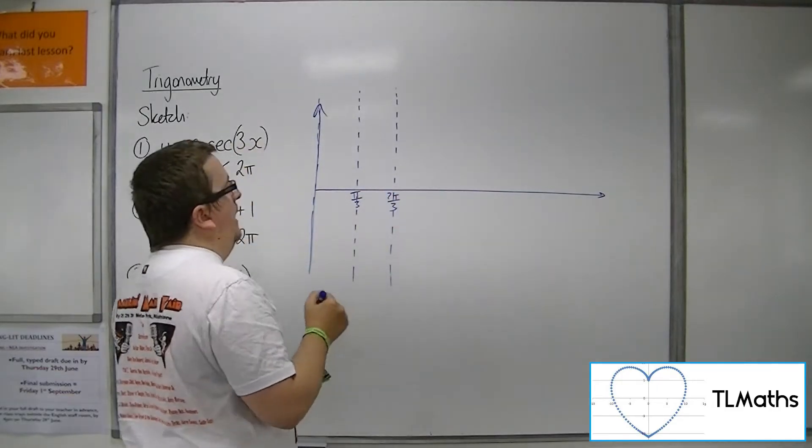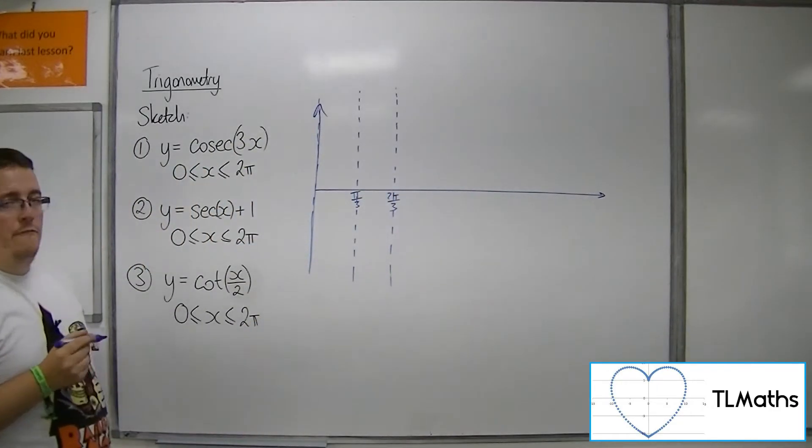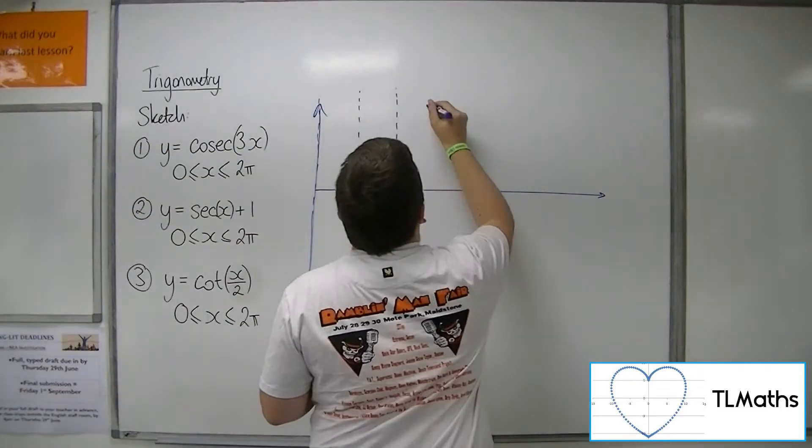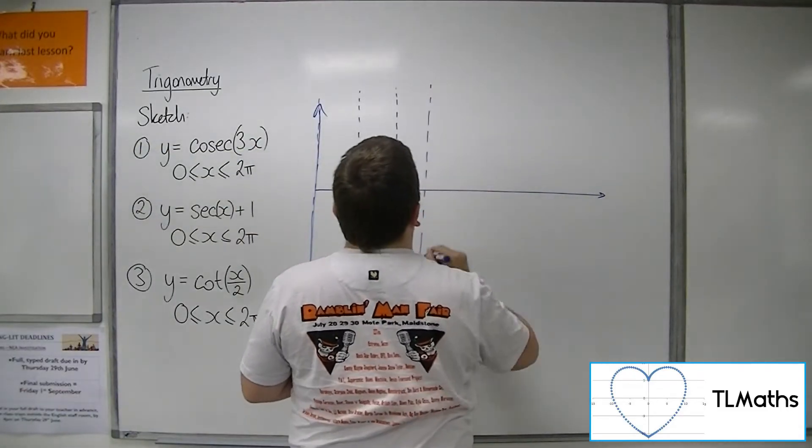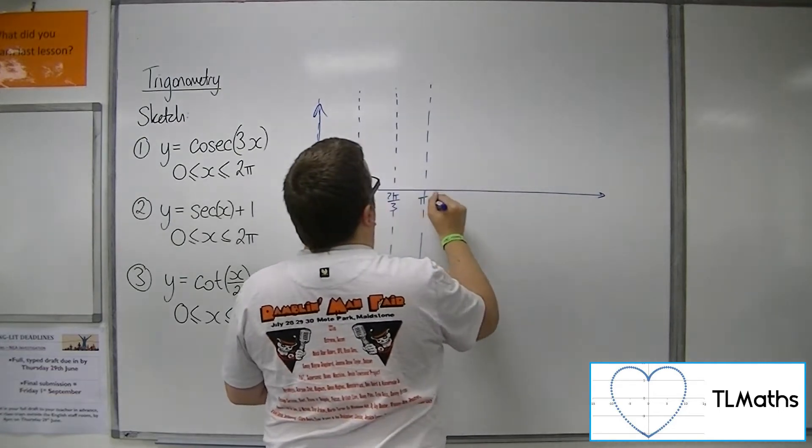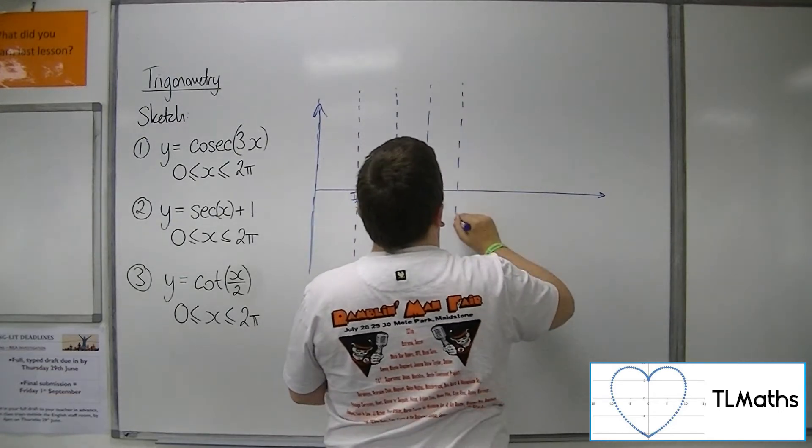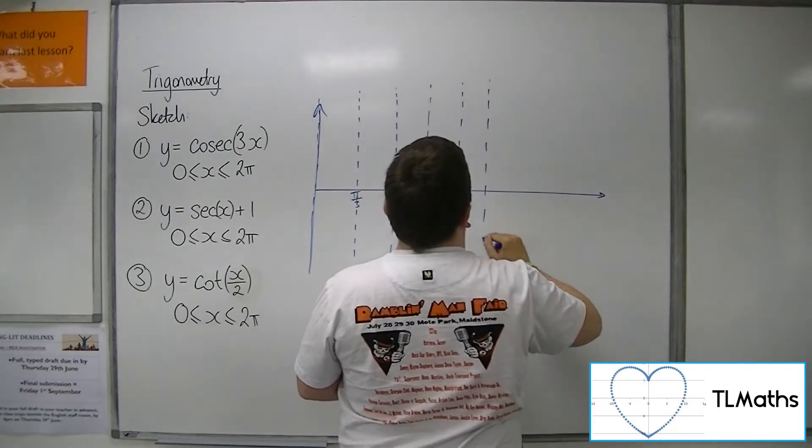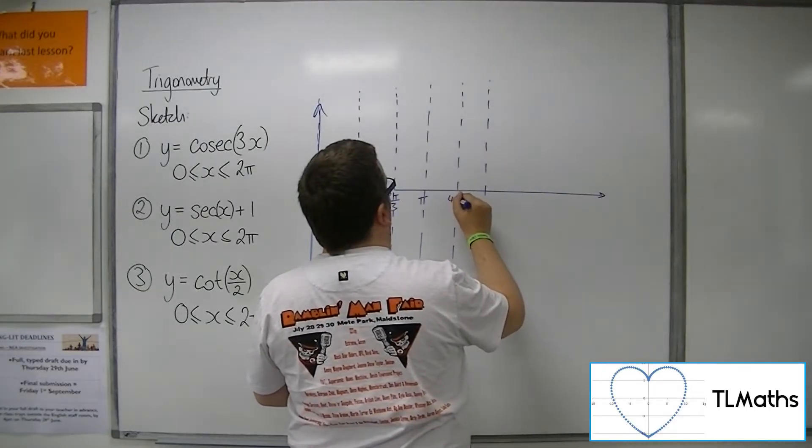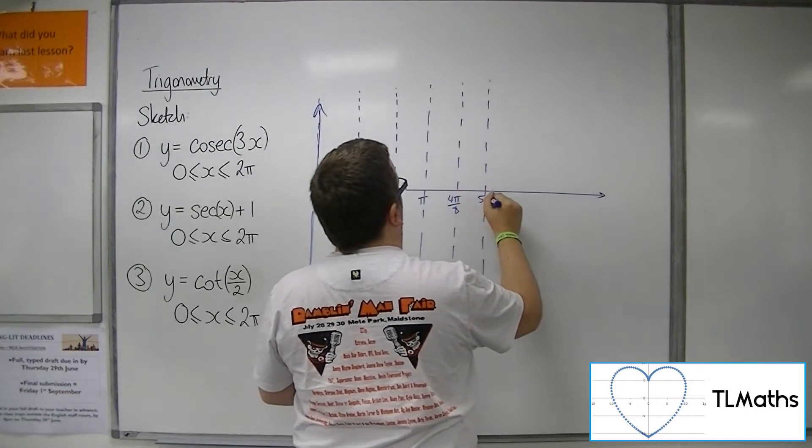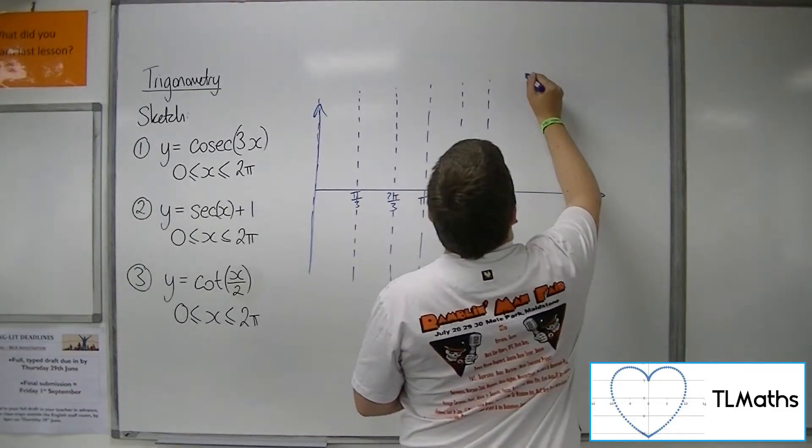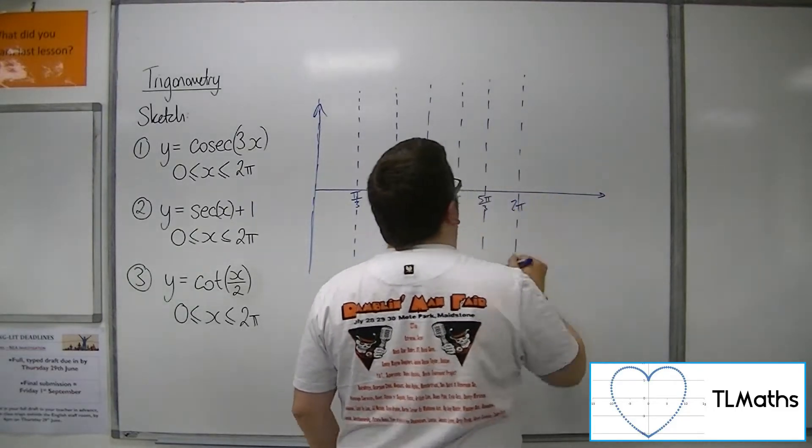And these asymptotes are going to appear every pi over 3. So that's your pi. Then we've got 4 pi over 3, 5 pi over 3, and then finally 2 pi.